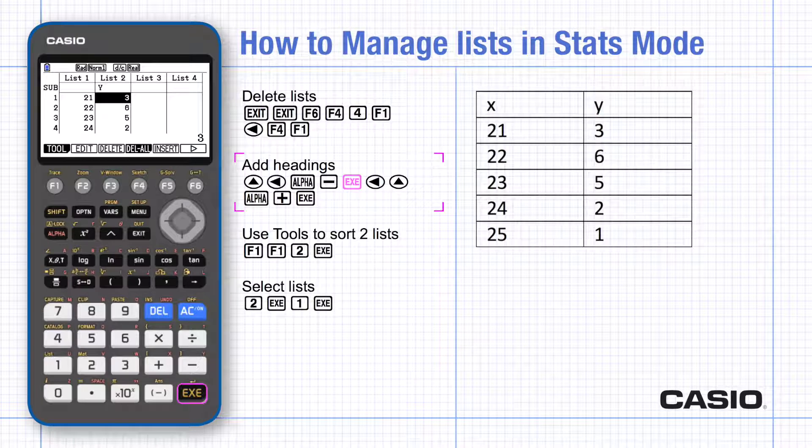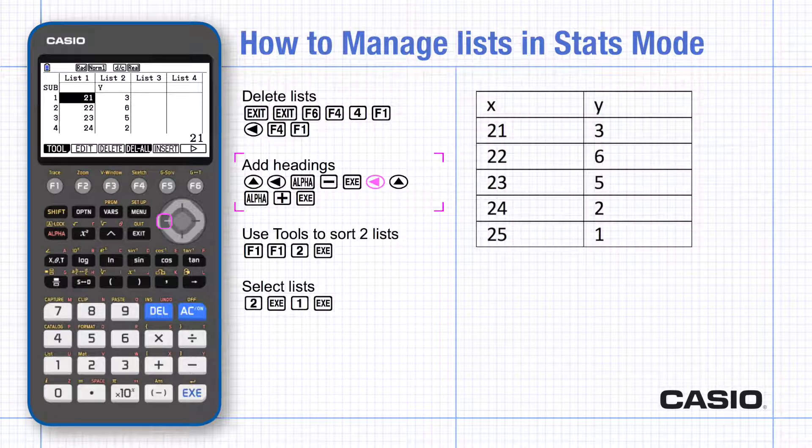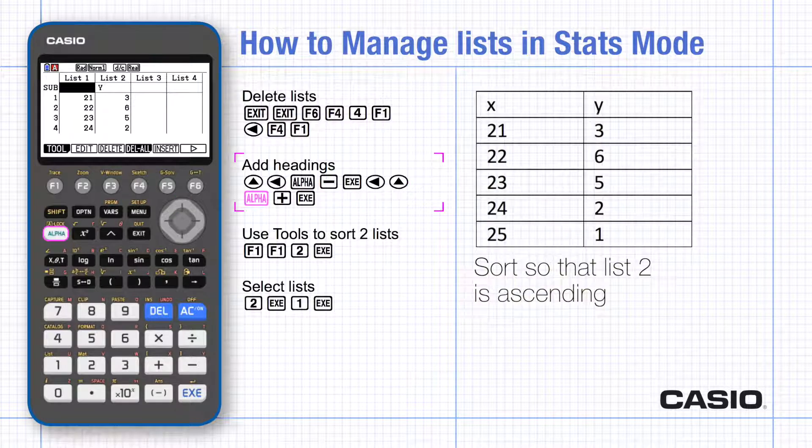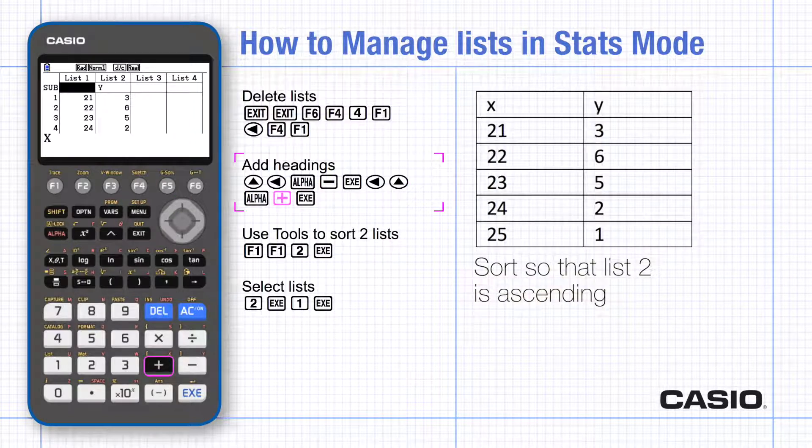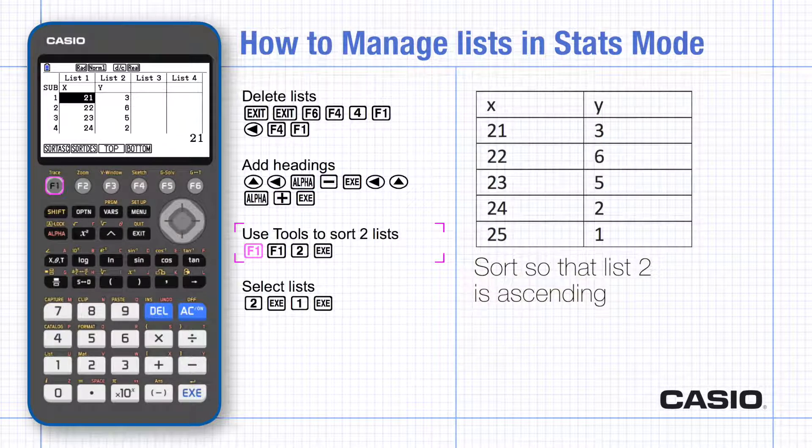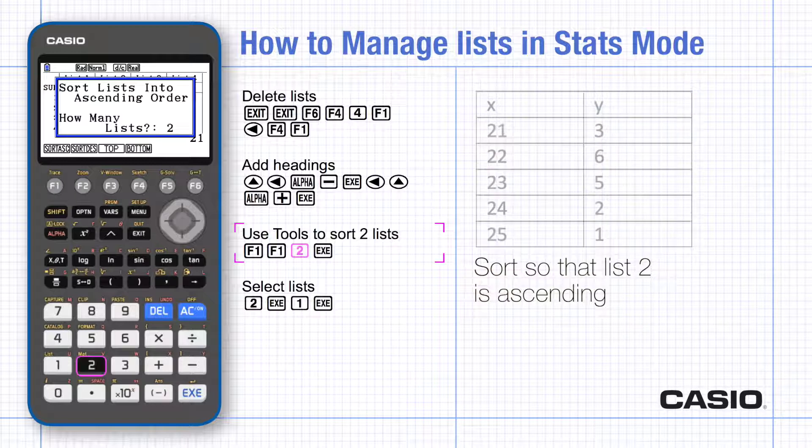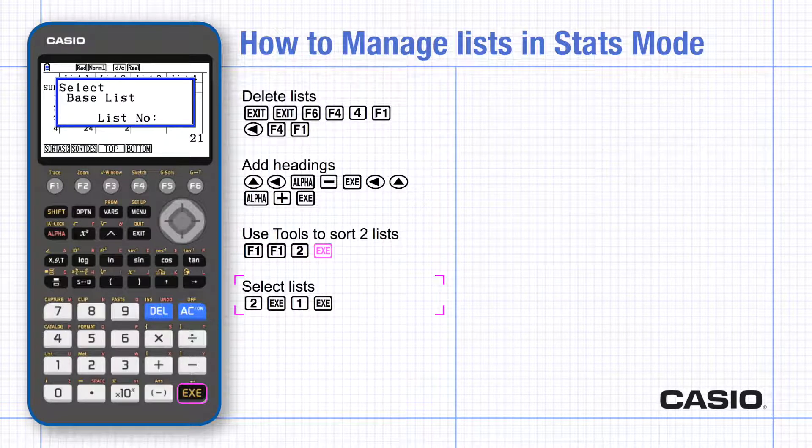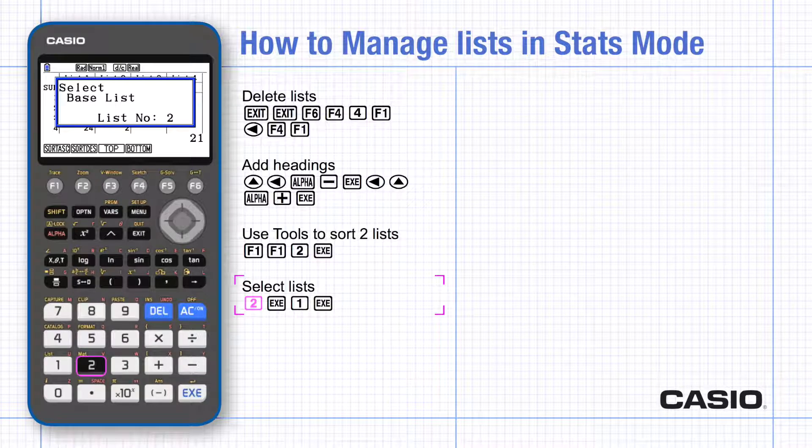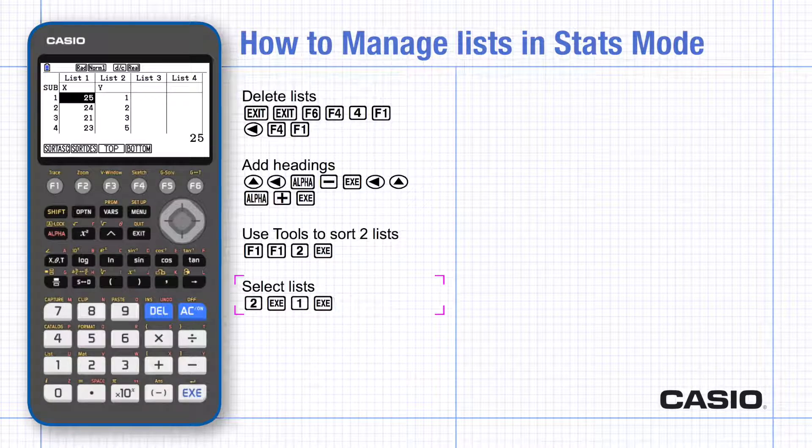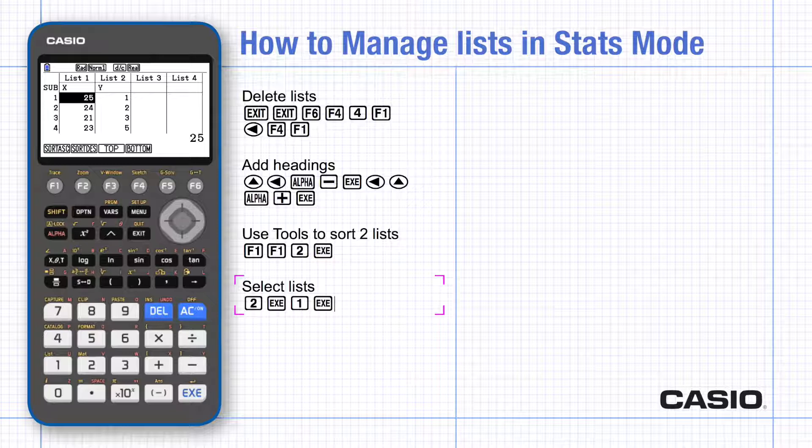To sort this data based on list 2, choose tool and then choose sort. The base list is list 2 in our case and the second list is list 1. Notice that now list 2 is in order and the pairs of values have been kept together.